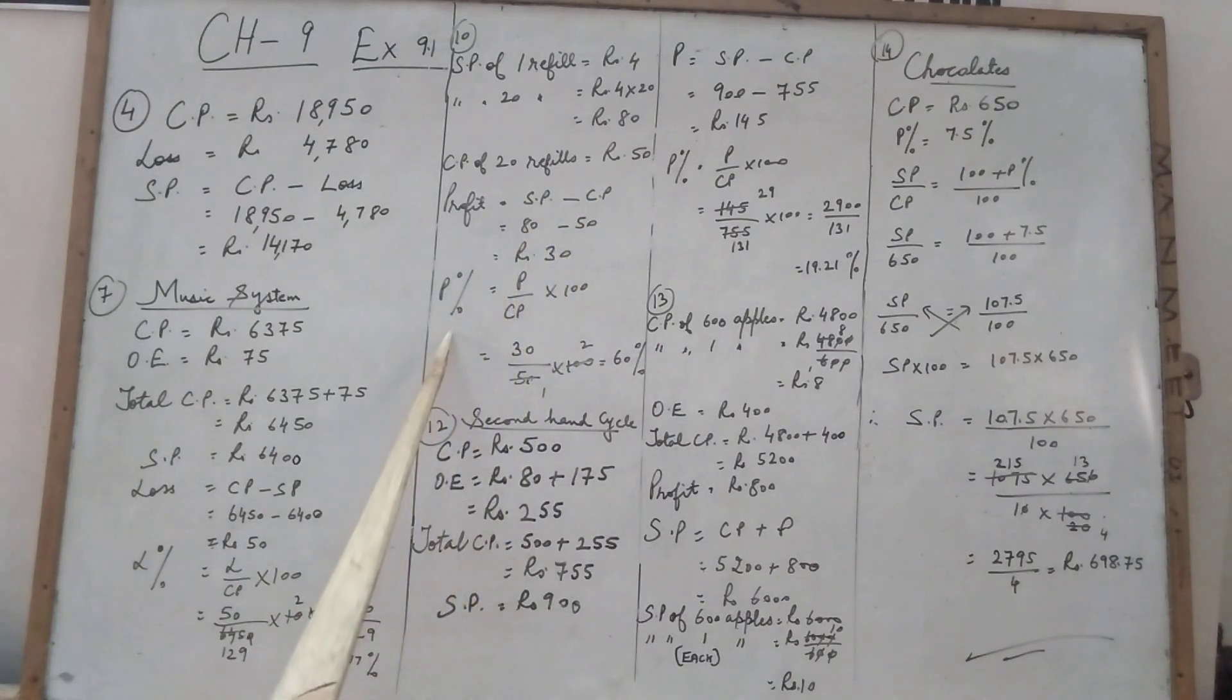But here again we have to find the percentage. Profit percentage is profit upon CP into 100. By putting the value, cancel it. 50 into 2 is 100. 30 into 2 is 60%. Answer. 11th one is same.